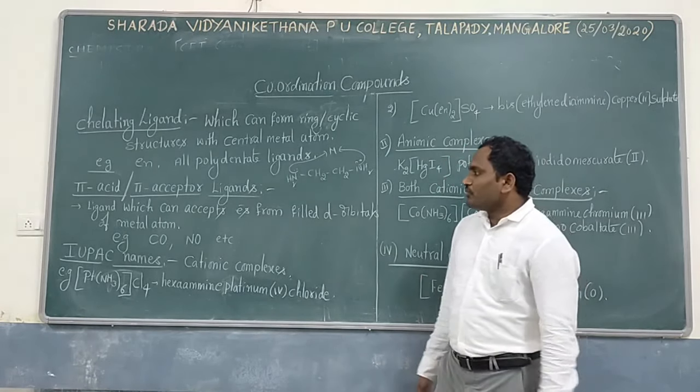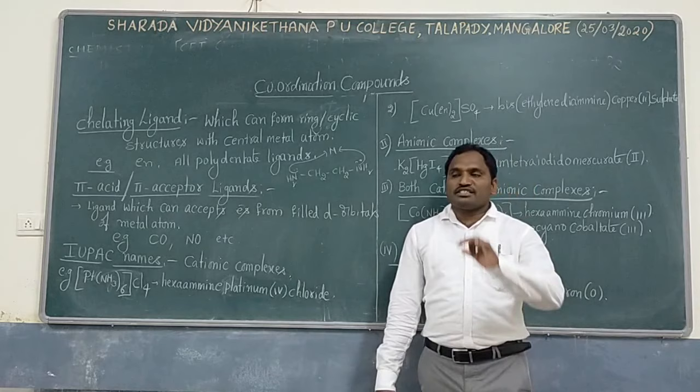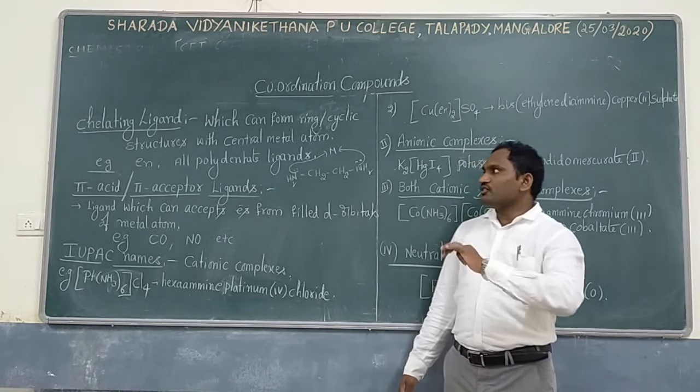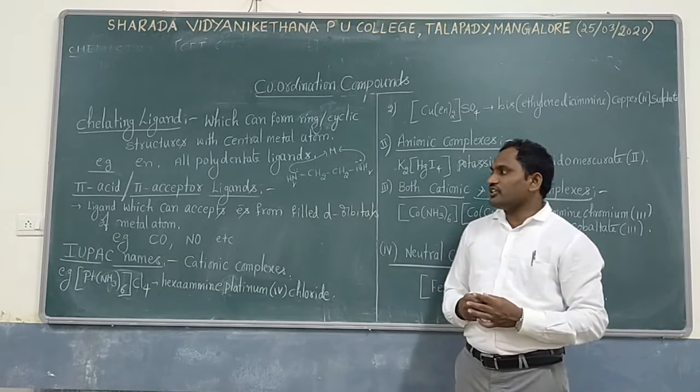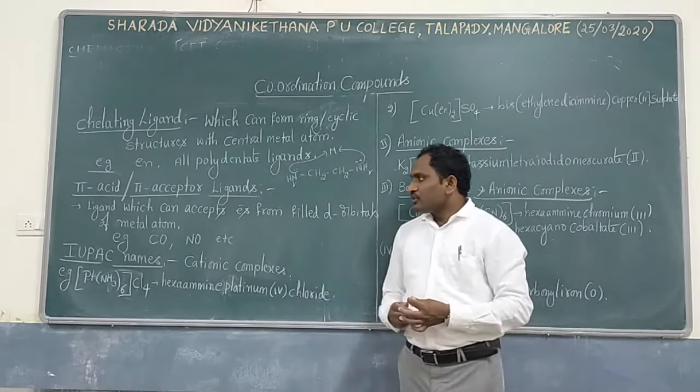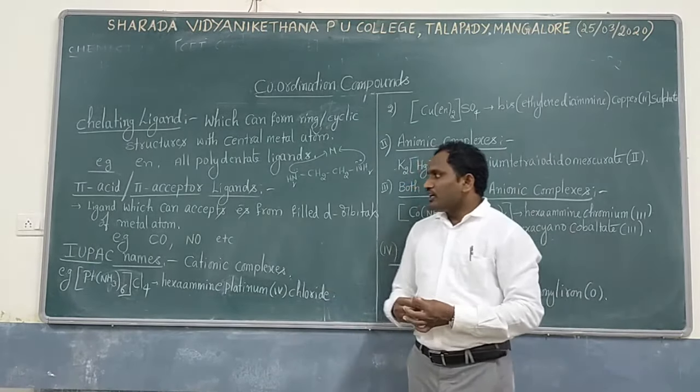Another concept: IUPAC names. By going to IUPAC names, all the rules in this crash course are discussed in detail, but I can explain through the main types and examples only. First one: cationic complex — where the coordination sphere gets a positive charge.